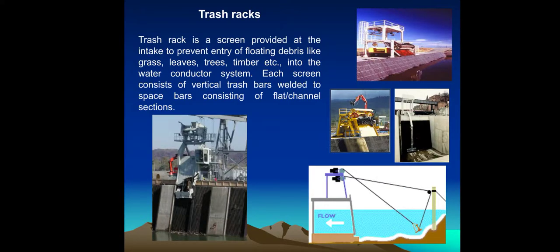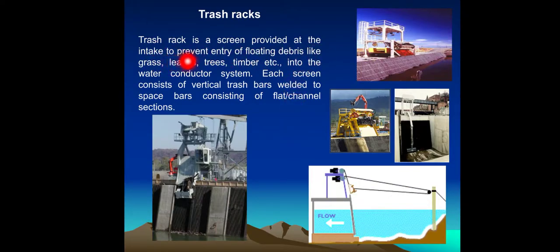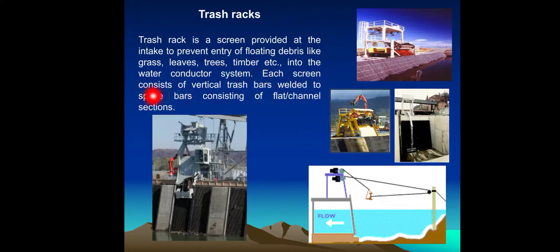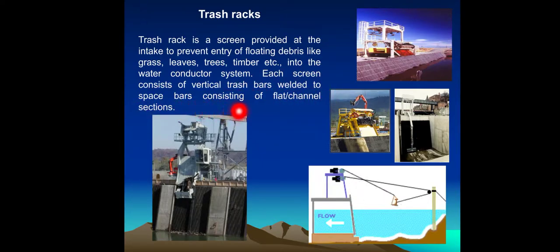Trash Rack: A trash rack is a screen provided at the intake to prevent entry of floating debris like grass, leaves, trees, and timber into the water conductor system. Each screen consists of vertical trash bars welded to spacer bars consisting of flat channel sections.